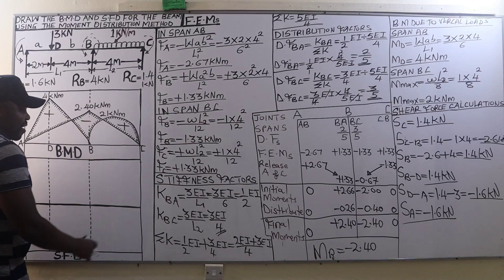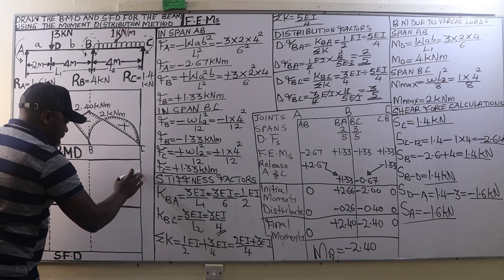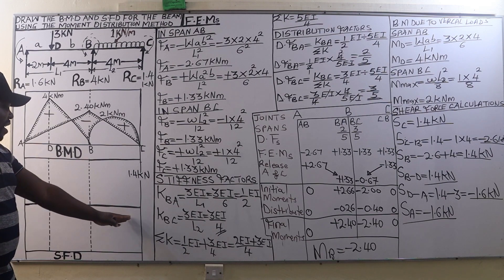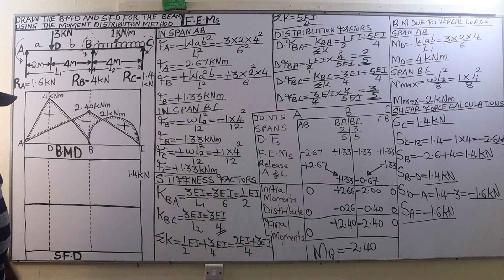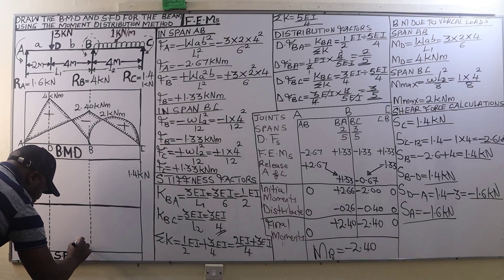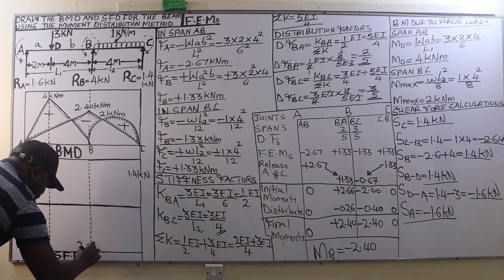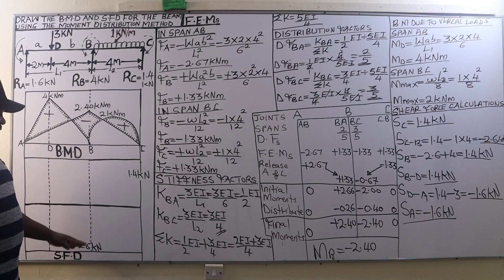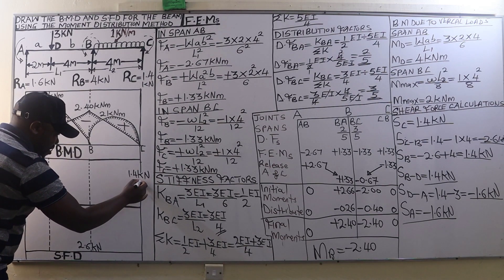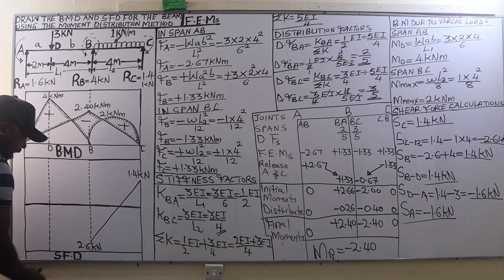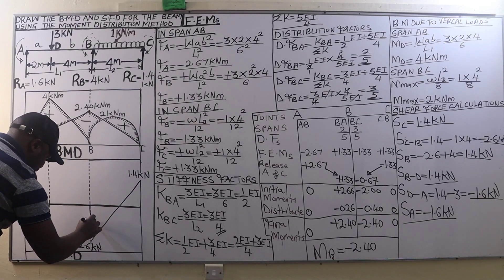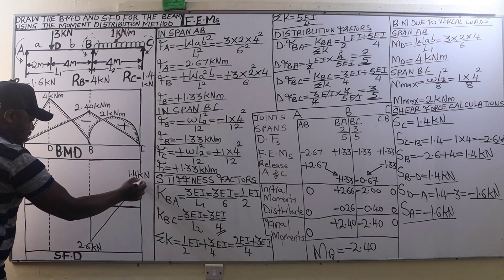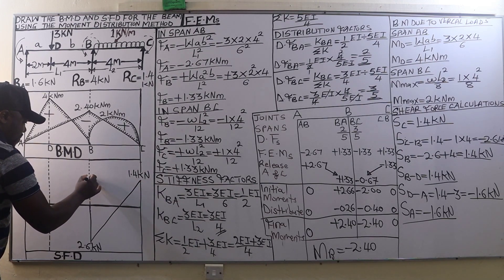Now we plot the shear force diagram (SFD). Starting with the shear force at C of 1.4 kilonewtons, plotted above the horizontal line. The shear force between C and B changes uniformly from 1.4 to negative 2.6, so negative 2.6 is drawn below the horizontal line — remembering that positive shear forces are above. We join 1.4 to negative 2.6 and then back to the horizontal line.